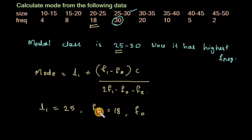F₀ is the frequency of the preceding class. F₁ is the modal class frequency, which is 30. F₂ is the next class frequency, which is 20, and C is the class interval, which is 5.